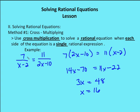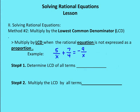Method number one: when I have single rational expressions on both sides of the equation, I can just cross multiply and solve for x. Method number two is to multiply by the lowest common denominator. If I have 5 over x plus 7 over 4 equals negative 9 over x, I determine that the lowest common denominator of all the terms is 4x, and I multiply every term by 4x.